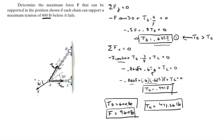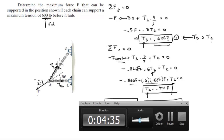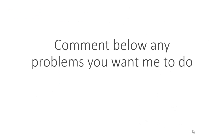Let me explain for those still confused: Tb equals 600 pounds because if we instead set Tc to 600, then since Tb is greater than Tc, Tb would exceed 600 pounds and the chains would fail. That's why Tb governs as our limiting tension. Please comment below if you want me to work any problems — I'll be happy to help, thank you.